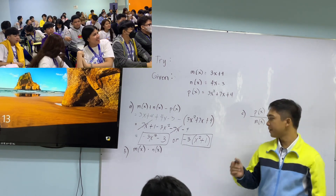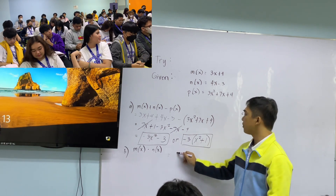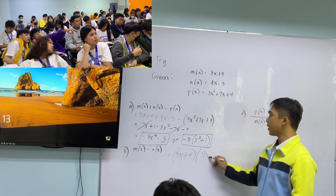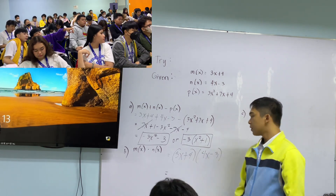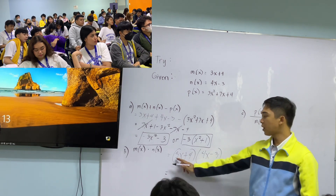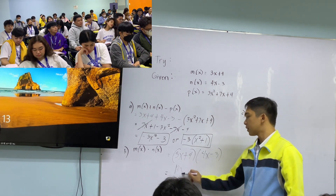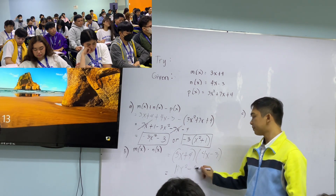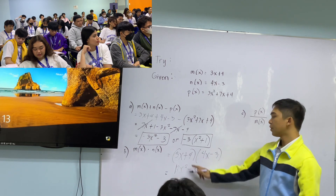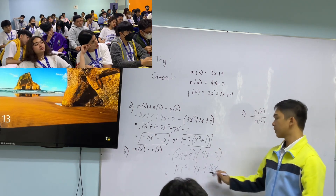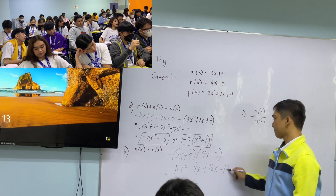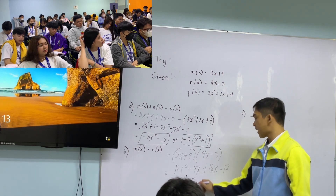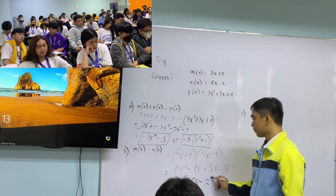For the multiplication problem, we have (3x + 4) times (4x − something). Using FOIL: 3x times 4x = 12x², 3x times −3 = −9x, 4 times 4x = 16x. Combining like terms gives us 12x² + 7x − 2. That's the answer.